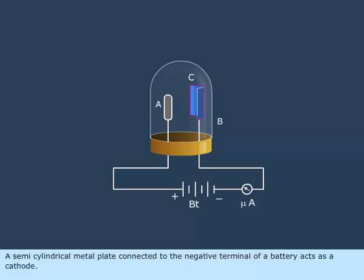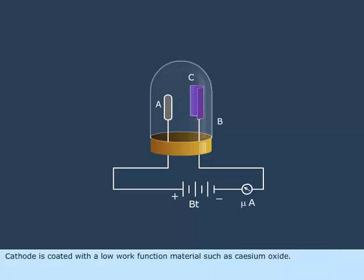A semi-cylindrical metal plate connected to the negative terminal of a battery acts as a cathode. The cathode is coated with a low work function material such as cesium oxide.